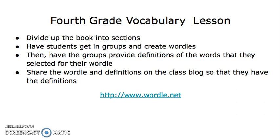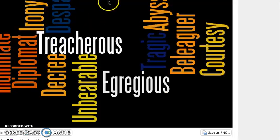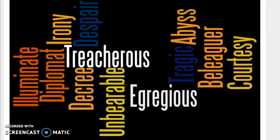I'll show you the wordle that I created myself. The words I picked out of the text were: diplomat, irony, despair, treacherous, decree, tragic, abyss, and courtesy. I thought fourth-graders might not understand all these words, so they could create a little vocabulary book to go along with the novel.